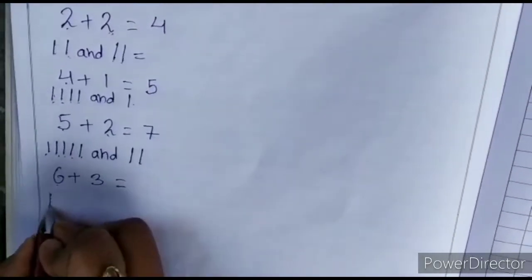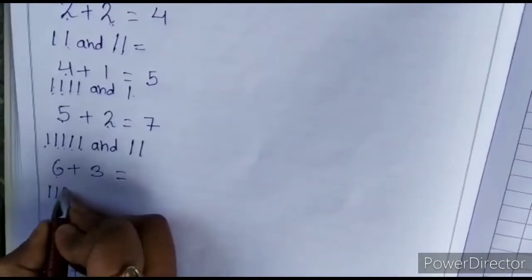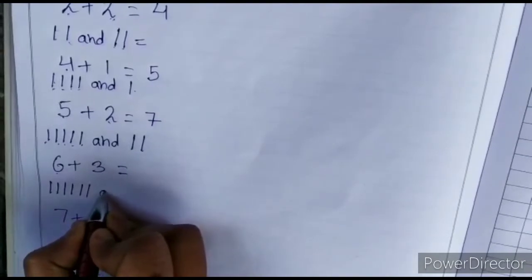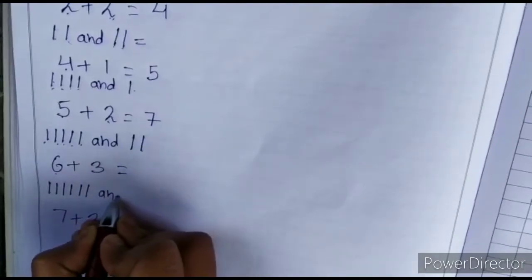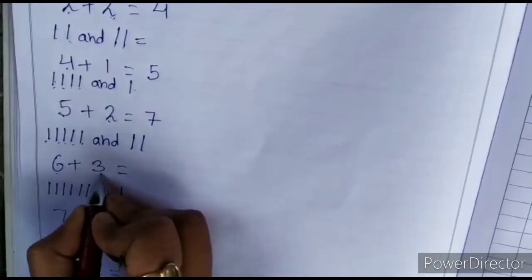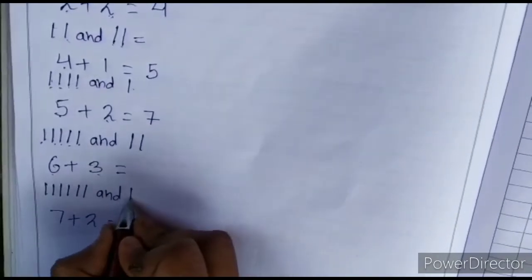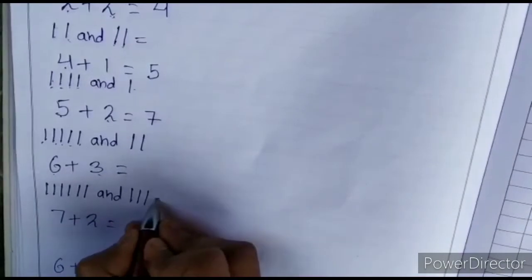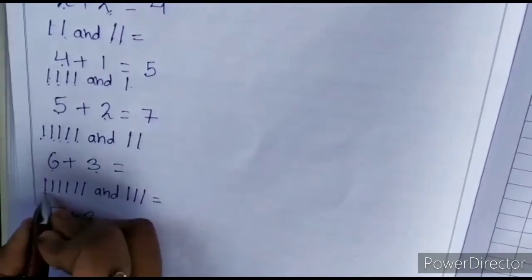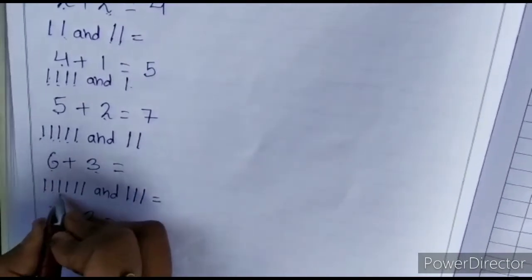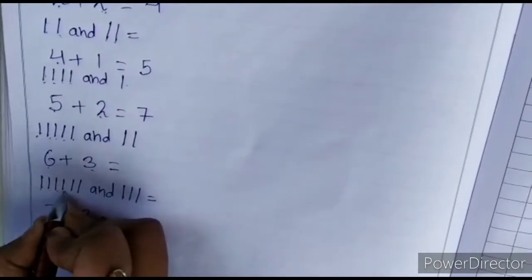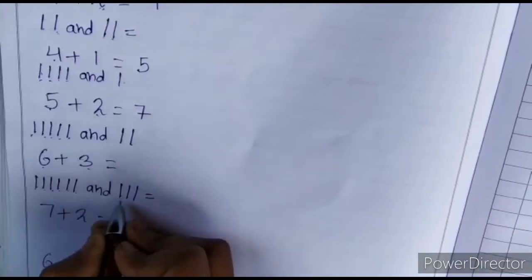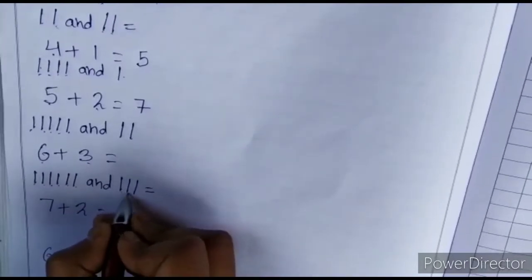1, 2, 3, 4, 5, 6. And 3. 1, 2, 3. Is equals to. 1, 2, 3, 4, 5, 6, 7, 8, 9.